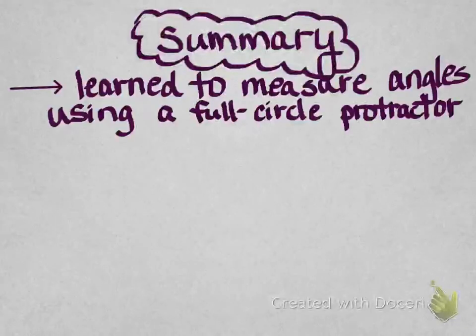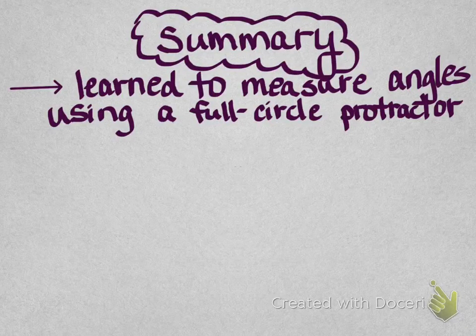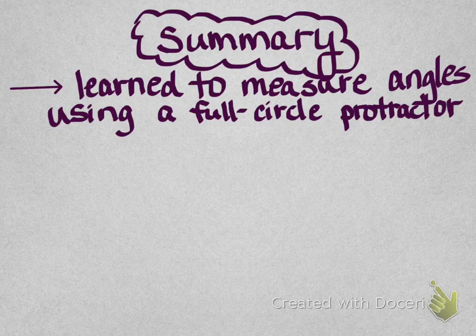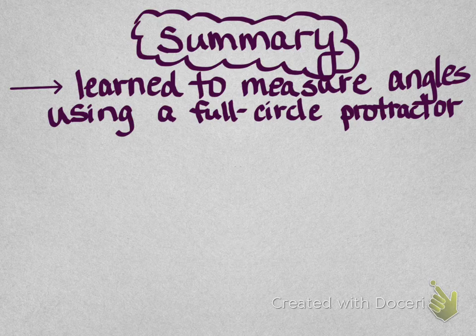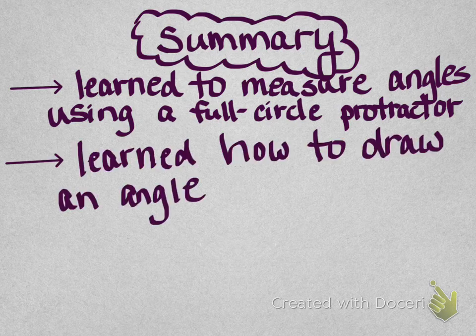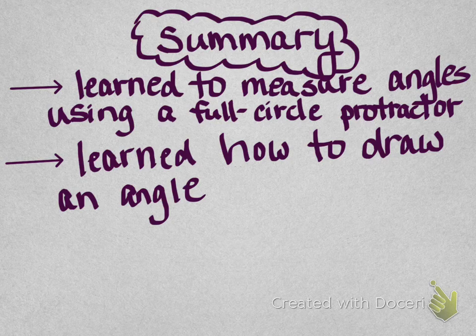So to summarize what we've done in this lesson, we're learning to measure angles using a full circle protractor. And like I said, it's going to take some practice, and once you actually see it and you can actually move it around, this will make more sense. We learned how to draw an angle. And again, you're going to have to actually do it for it to make sense.